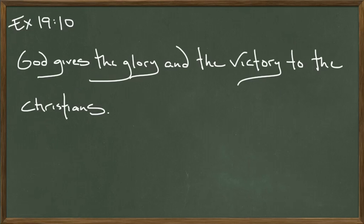The first sentence is Exercise 19, sentence number 10, and the sentence is: 'God gives the glory and the victory to the Christians.' The one thing I always make my students do is label every word before we diagram and translate it, if we're going from English to Latin.